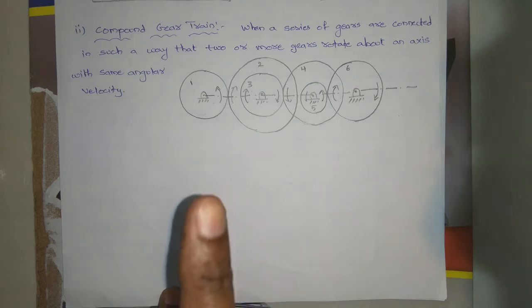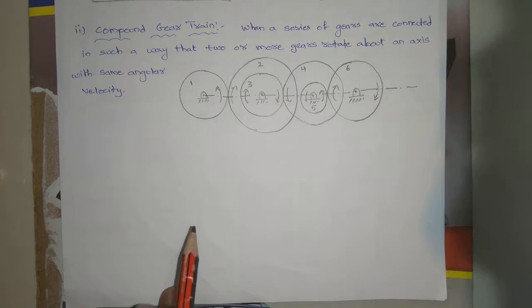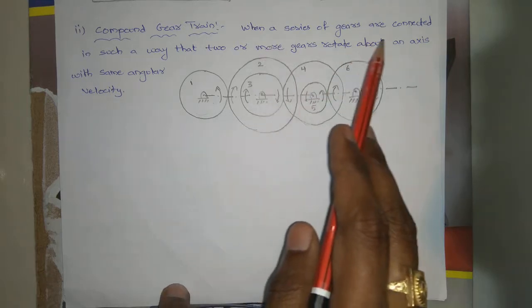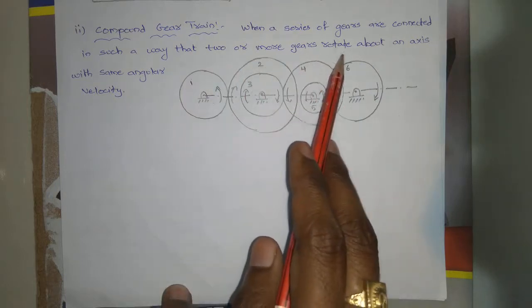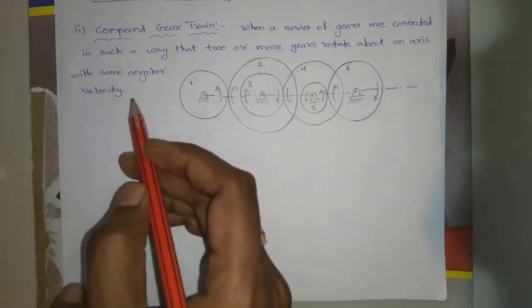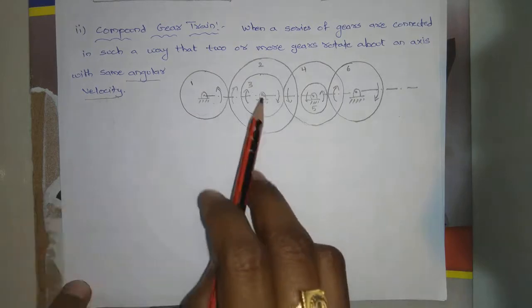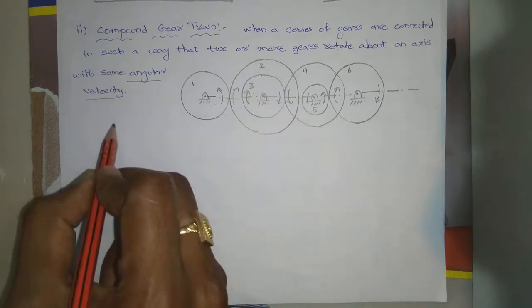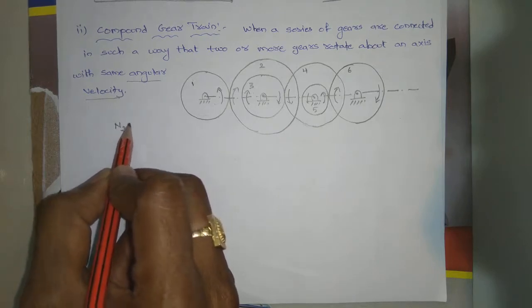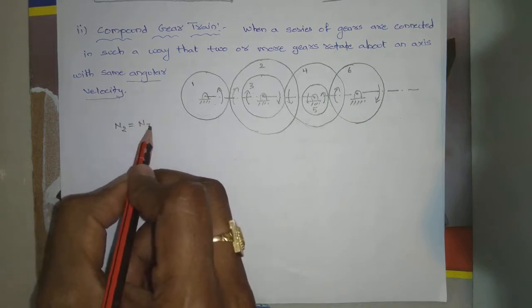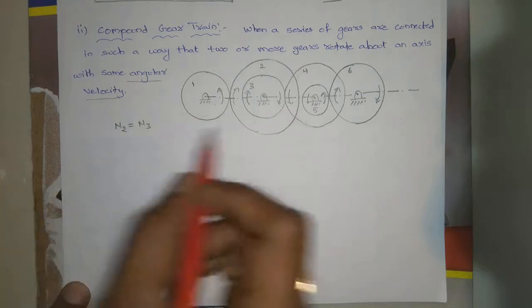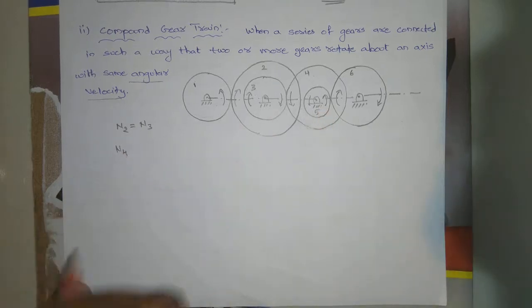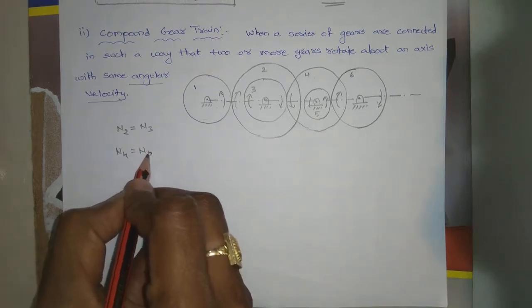In a simple gear train we have only one gear fitted per shaft, but in compound gear trains we have two gears fitted on one shaft. When a series of gears are connected such that two or more gears rotate about an axis with the same angular velocity — gears two and three share a common shaft and have the same speed, so n2 equals n3. Similarly, n4 equals n5.